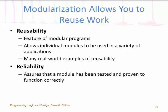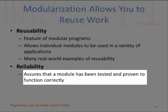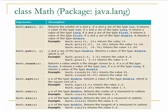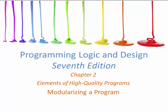Modulization also allows you to reuse work. Reusability is a feature of modular programs — it allows individual modules to be used in a variety of applications. Using reusable modules leads to greater reliability, which assures that a module has been tested and proven to function correctly. For example, in your Java math class, when you want to square root something, you use the square root method which has already been tested and proven to function correctly — you use that instead of writing it from scratch. That concludes this section; please join me in the next video where we will be discussing how to modularize a program.